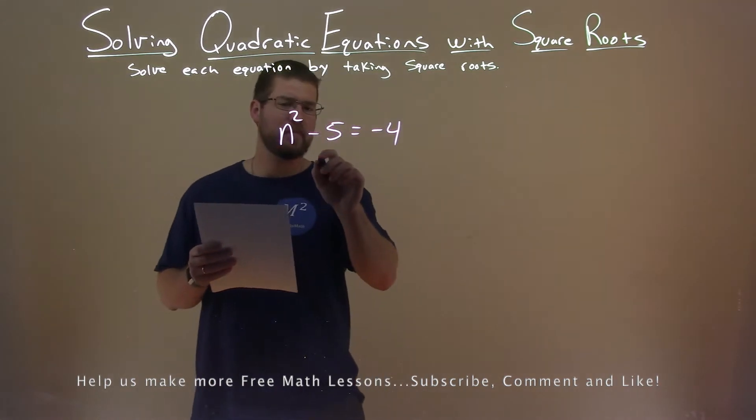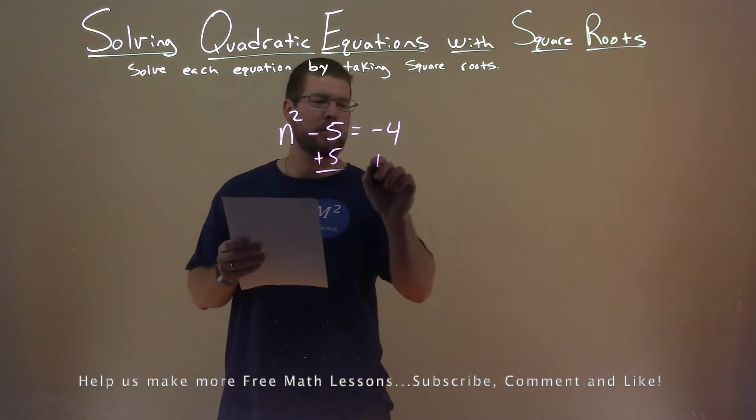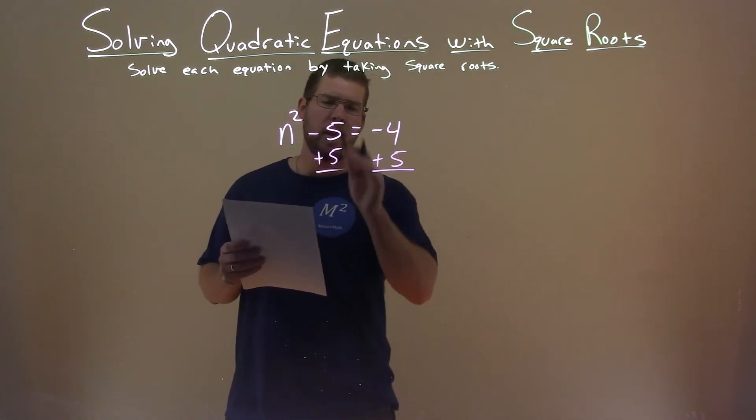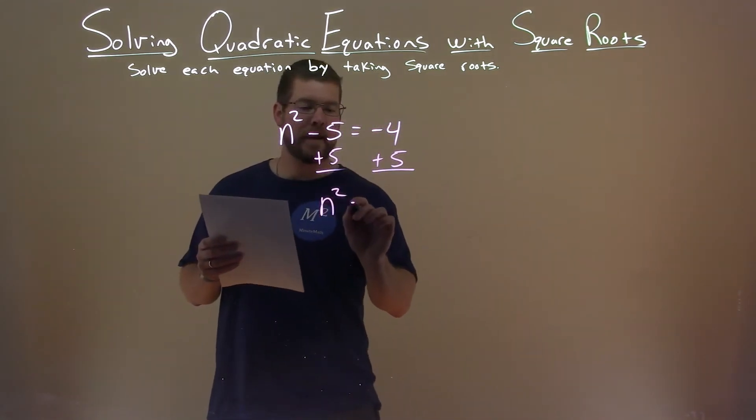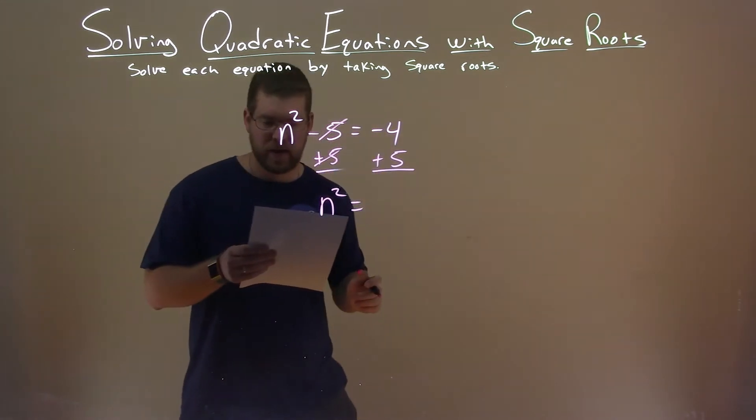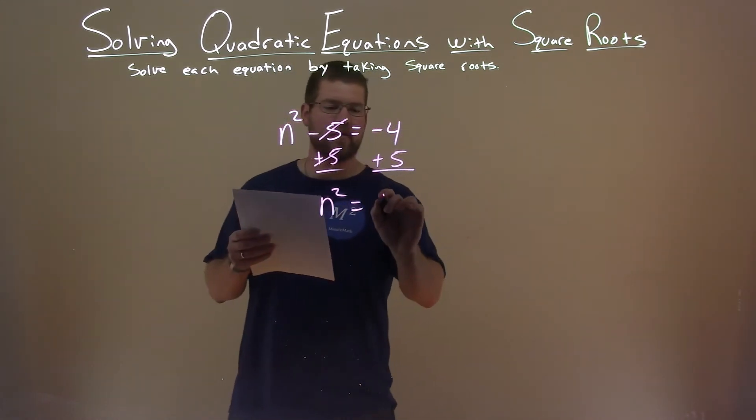First thing I'm going to do is add 5 to both sides. And in doing so, I'm left with n squared by itself, because these 5's cancel, and negative 4 plus 5 is a positive 1.